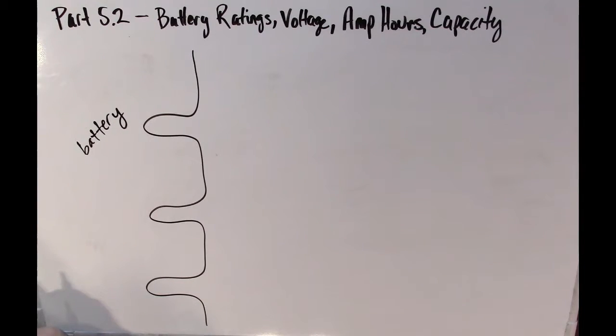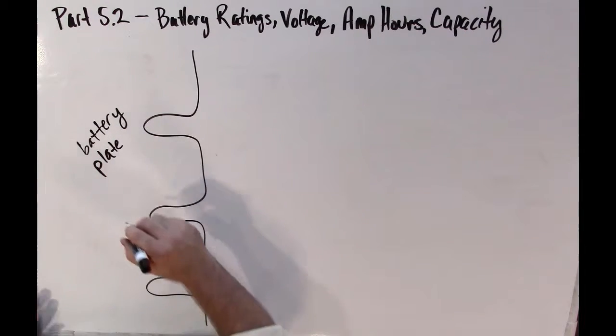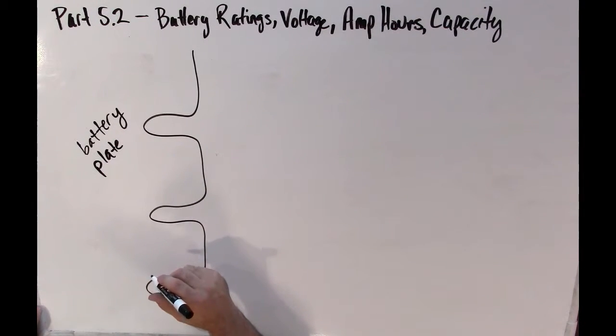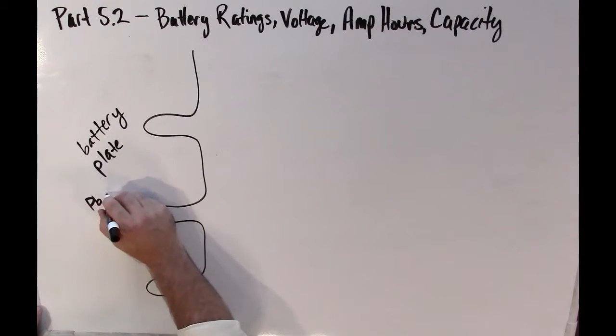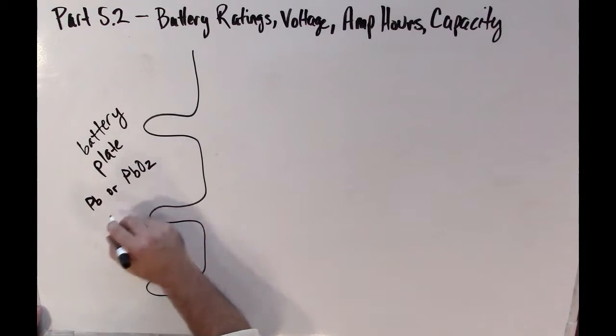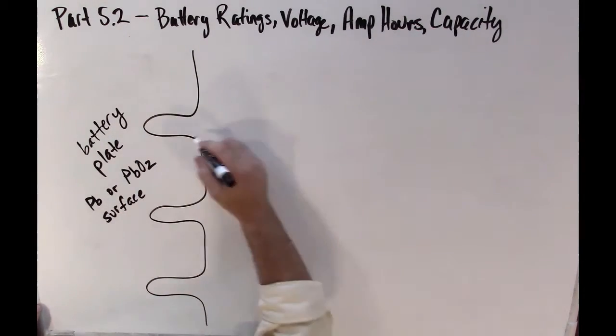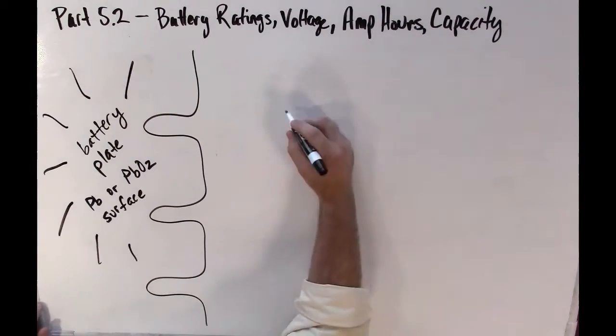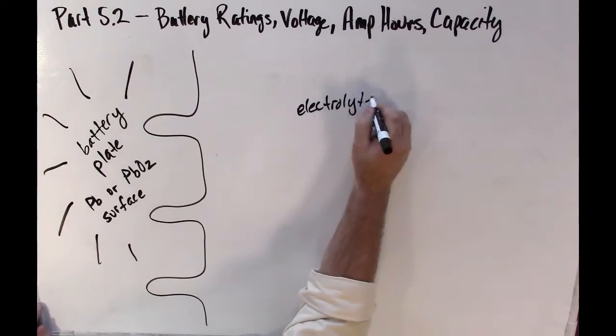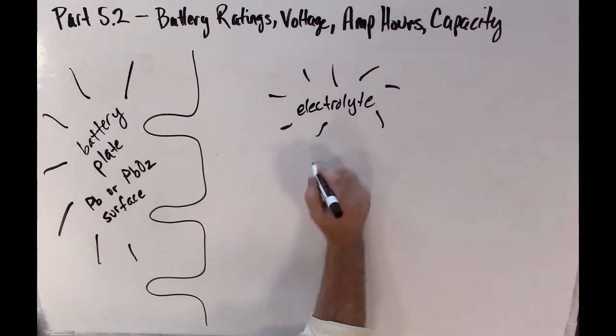Remember, the plate might be lead dioxide or lead, depending on if it's a cathode or anode. It's equally true for both. So this is a close-up of the lead plate. And at our microscopic level, over here on the left, you have these little pores. These little indentations are like pores in the surface, and that's to increase the surface area.